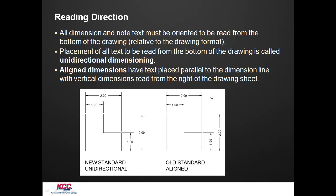The old standard in mechanical was aligned, in which it could either be read from the bottom or aligned with the object's edges. In this case, it was aligned with this surface and this surface. The aligned method is used still today by the architecture industry. So the mechanical industry is unidirectional. The architecture is aligned.